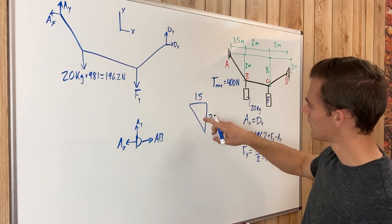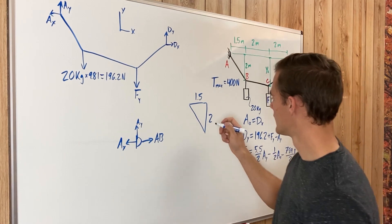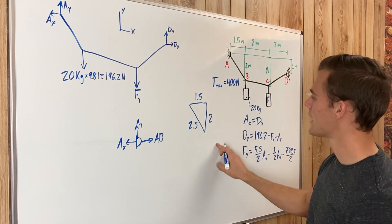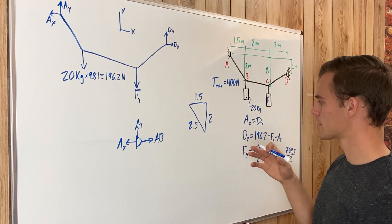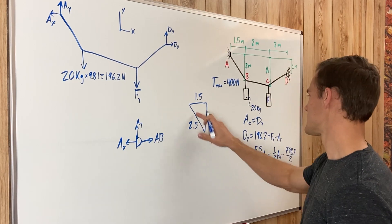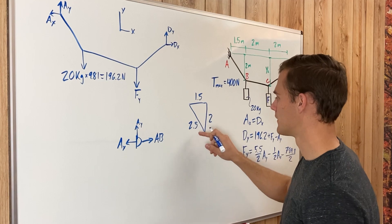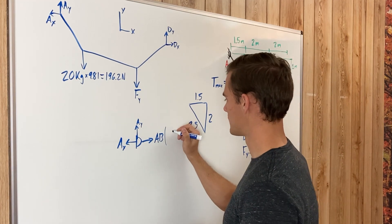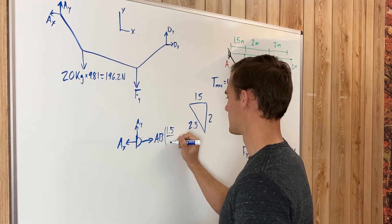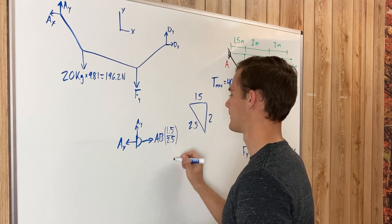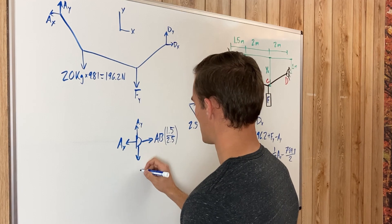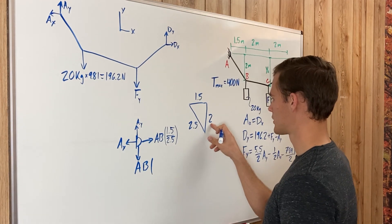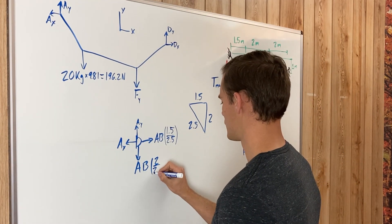Multiplying the sides by two gives 3 and 4, making this a 3-4-5 triangle, so the hypotenuse is 5 — divide by two and the actual hypotenuse is 2.5 meters. The horizontal component of the tension equals A-B times 1.5 divided by 2.5 (or equivalently 3/5), and the vertical component equals A-B times 2 divided by 2.5.